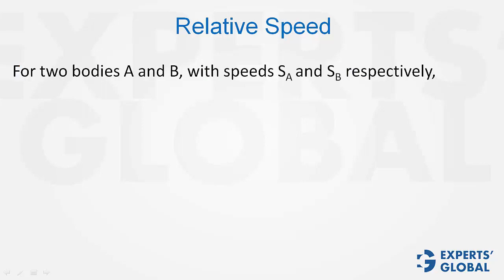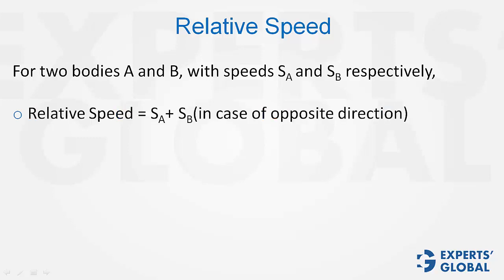The concept of relative speed. For two bodies A and B, with speeds SA and SB respectively, relative speed is the sum of two speeds when the two bodies move in opposite directions, whether towards each other or away from each other.